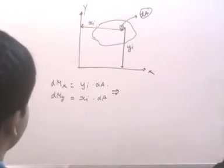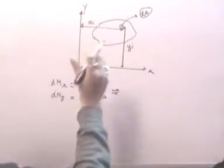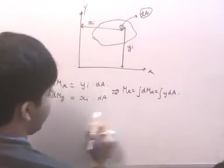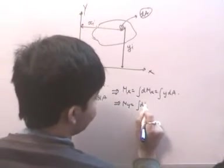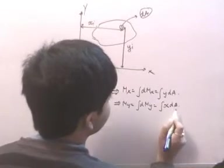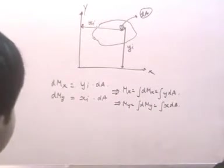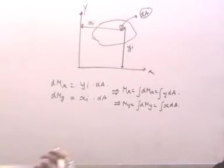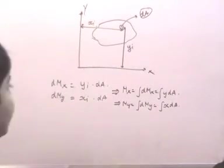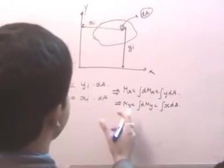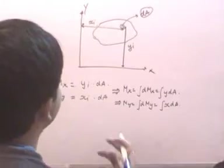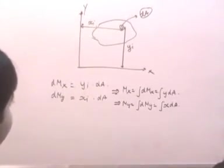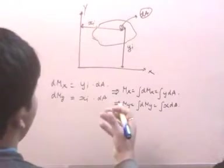If we integrate these, we essentially get the moment of the whole body about each axis. So mx = ∫y dA and my = ∫x dA. There are infinite elemental particles each having their moments, and the summation of all moments about the x-axis is mx, and about the y-axis is my. The centroid is that point at which the whole area is assumed to act.